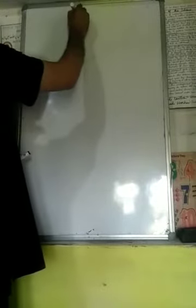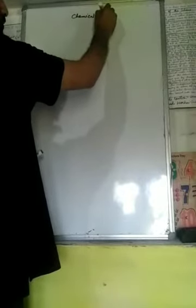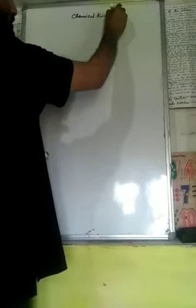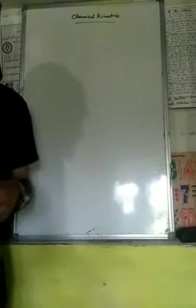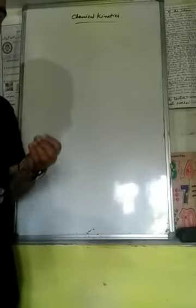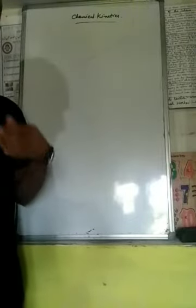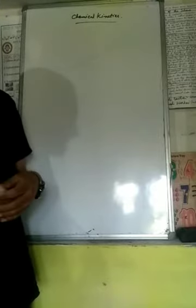Welcome to my dear online students. This is another session for Class II Health Chemistry. We are discussing chemical kinetics, and we have finished up to how to express the rate of reaction — how to express the rate of appearance of any product or disappearance of any reactant — which we discussed in the previous classes.